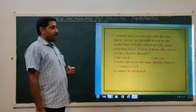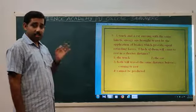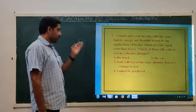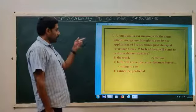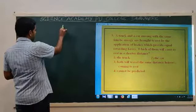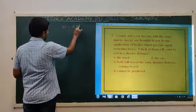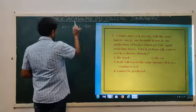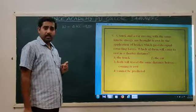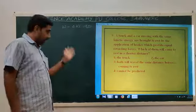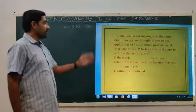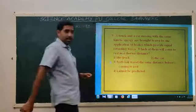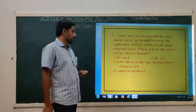A truck and a car moving with the same kinetic energy are brought to rest by brakes providing equal retarding forces. Which will come to rest in the shorter distance? According to the work-energy theorem, work done equals change in kinetic energy, and work done also equals force into displacement. Since both have the same kinetic energy and the same retarding force, both will travel the same distance before coming to rest.